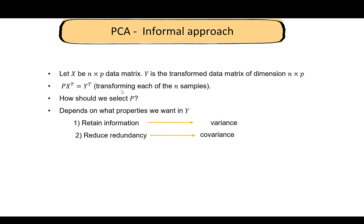We can address both objectives — maximizing variance and reducing redundancy — by looking at the covariance matrix of Y. The diagonal elements of the covariance matrix contain the variances, and the off-diagonal elements contain the covariances. By studying this covariance matrix of Y, we can address both points simultaneously.